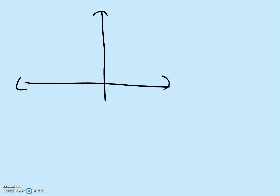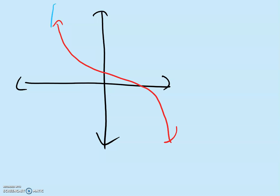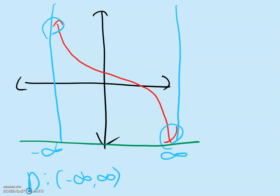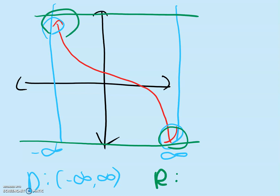For the second example, we're going to take that cubic function we had earlier and reflect it over the x-axis, and move it a little bit to the right. It looks something like this. When we find the domain here, we still have an arrow on the left — negative infinity — and on the right side we still have an arrow — positive infinity. So the domain is negative infinity to positive infinity. And the range on the bottom we have an arrow, and on the top we have an arrow, so the range is still from negative infinity to positive infinity.